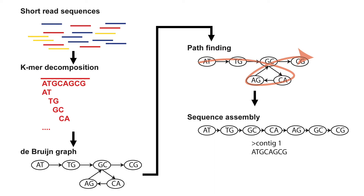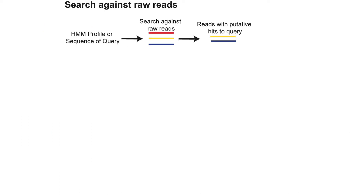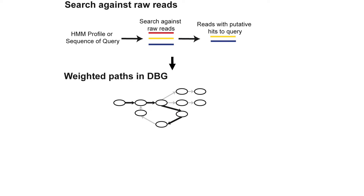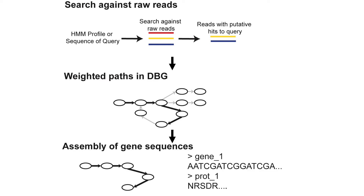Over the past decade, new analysis methods have begun to take advantage of this data structure, utilizing them as an efficient way to represent different kinds of sequences. An example of this can be seen in gene targeted assembly. These approaches seek to assemble gene sequences directly from raw reads instead of assembling genomic sequences first. These methods utilize existing gene sequences as references to add weights to the de Bruijn graph, and these weights can then be used to find paths within the de Bruijn graph that can be extracted and assembled directly into gene and protein sequences.